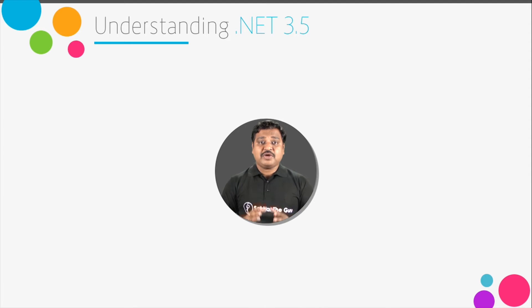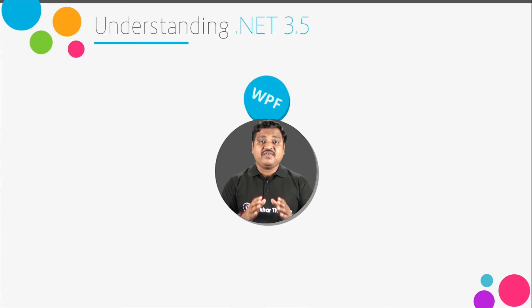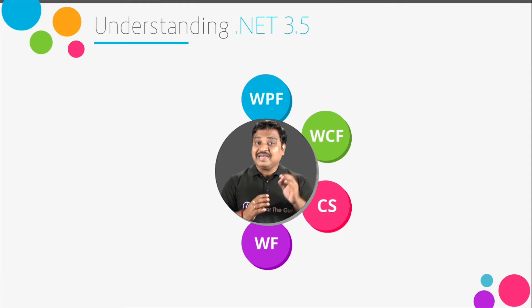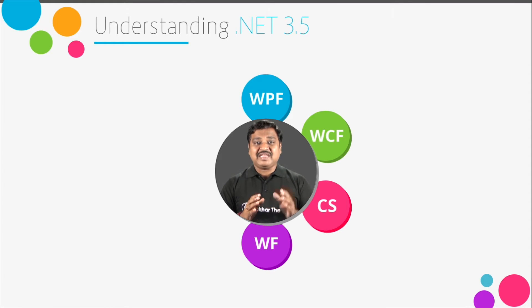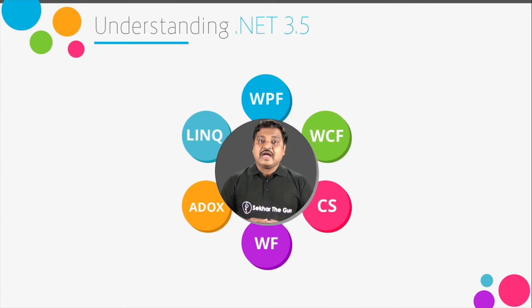.NET Framework 3.0 was introduced in 2006, which consists of complete support of .NET 2.0. Along with that, there are some new frameworks added like WPF, WCF, CS, and WF. And in 2007, .NET 3.5 was released with yet another powerful frameworks like ADO.NET Entity Framework and LINQ. Now let us understand these technologies in short and what is the difference between .NET 3.0 and .NET 3.5.